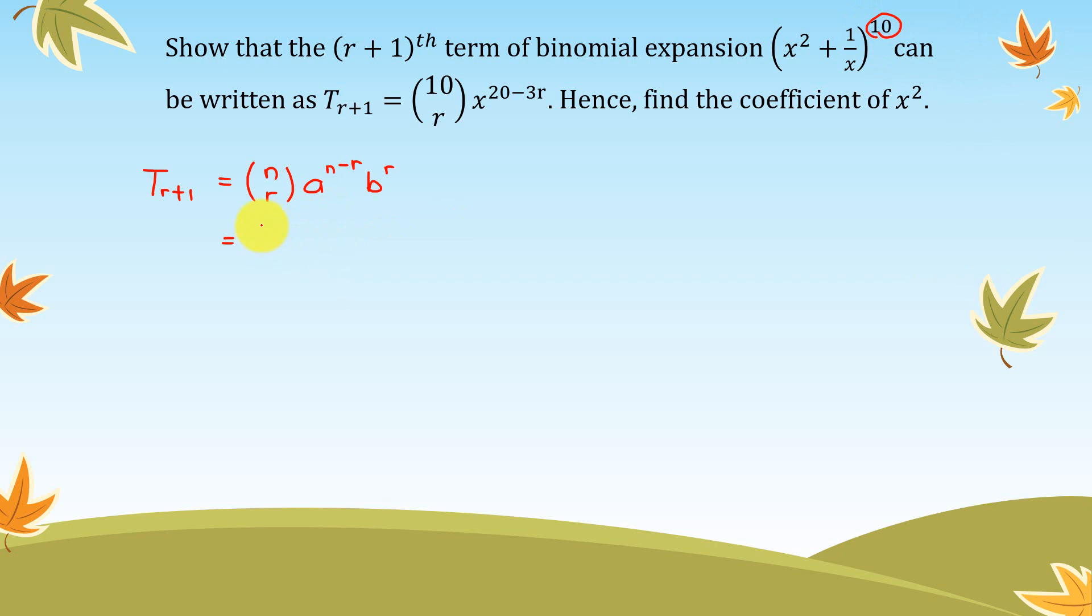So 10 choose r. a is the term in front here, so in this case we have x², so x² to the power of (10 - r). And then b is this one.